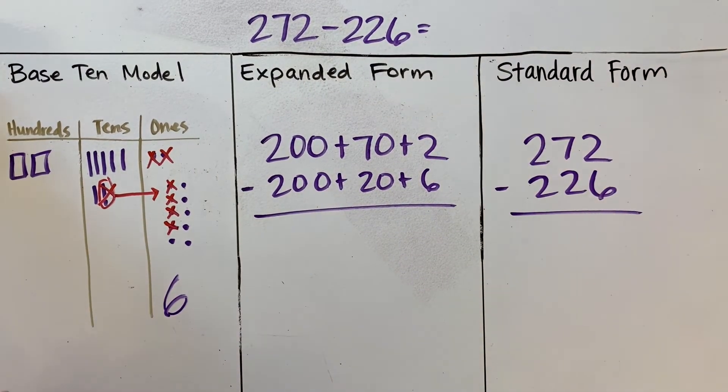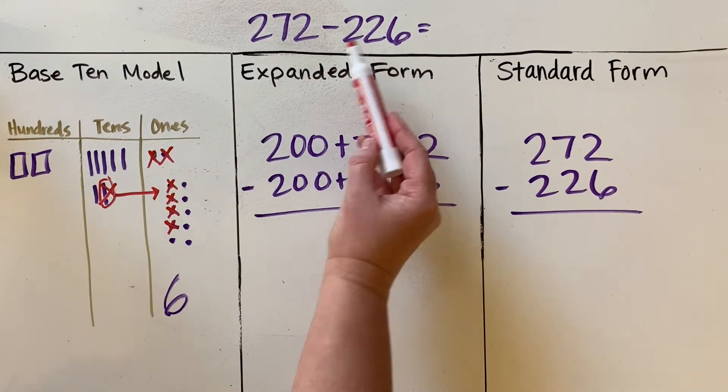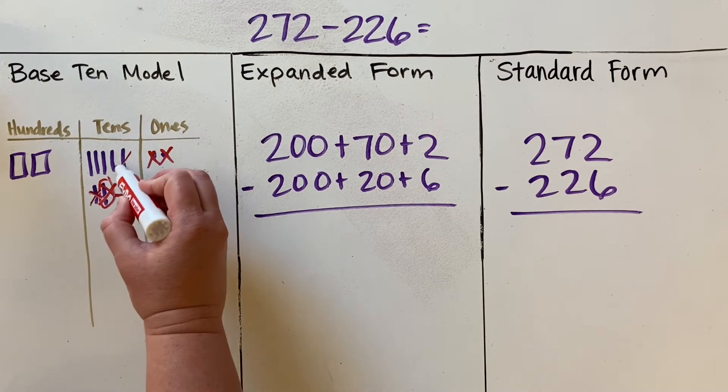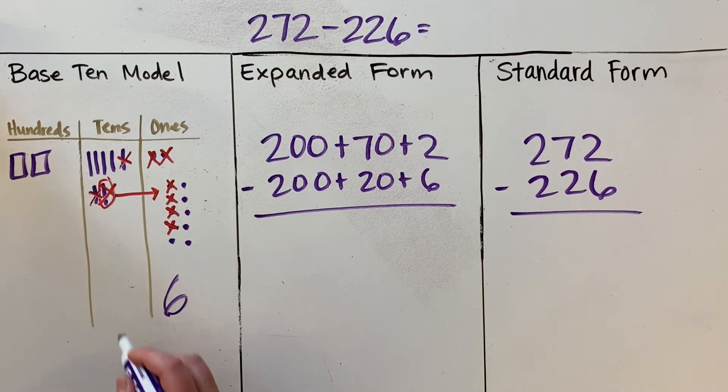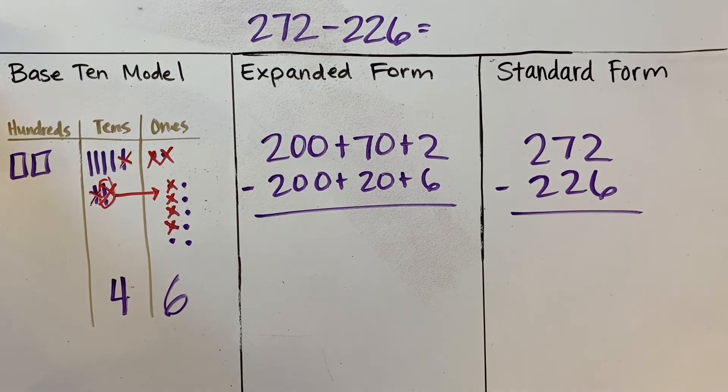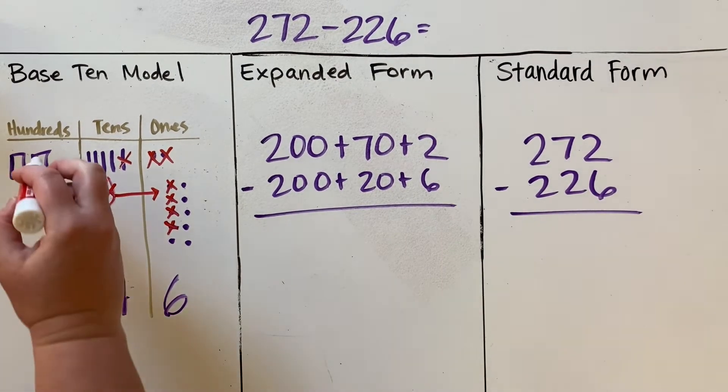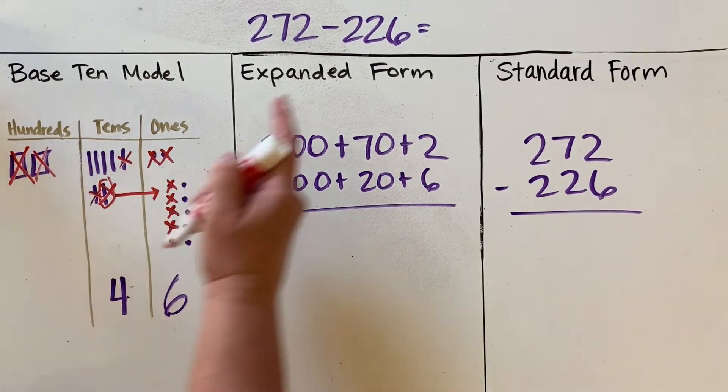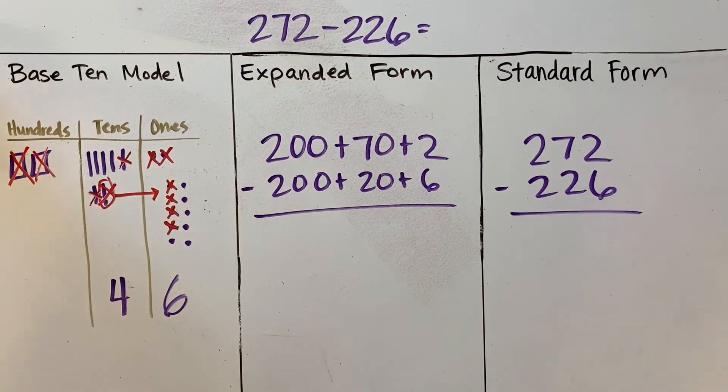I can subtract my tens—I subtract two tens, so there's one, two, and how many are left? There are four tens left. And I subtract my hundreds—I subtract two hundreds, which means there are no hundreds left.